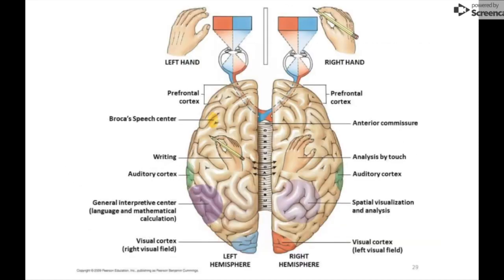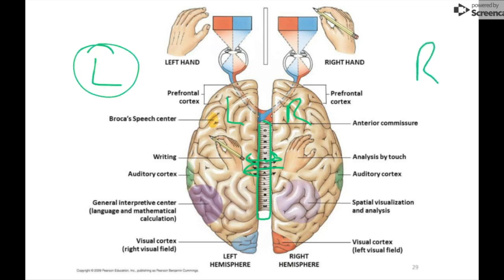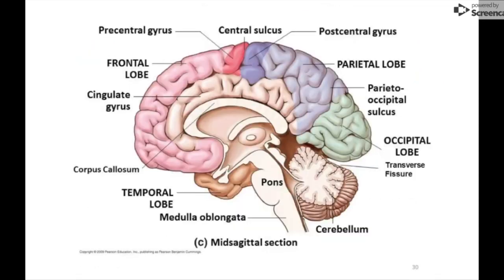Here's a diagram showing the corpus callosum, which connects the two hemispheres, viewed from the top with the left and right hemispheres visible. It illustrates how signals can travel from one side of the brain to the other, and shows the basic lateralization layout — the left side tending toward math and science, the right side more arts-focused.